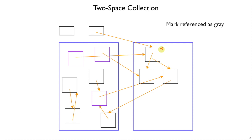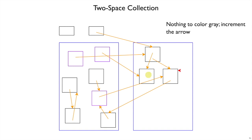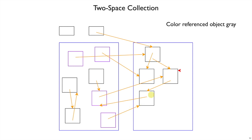We're done with this object, so we paint it black by incrementing the red pointer to the next object in to-space. We look at that object — it has no outgoing edges, so we're done with it and just paint it black by moving the pointer along. The next object has one outgoing arrow into from-space, so we copy that new object over, record a forwarding pointer for where it went, and update our object to point to the new copy.